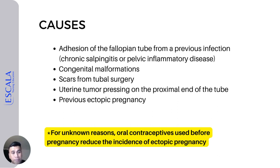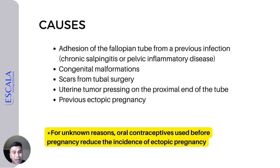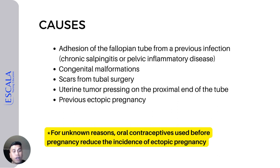Another cause is a uterine tumor which presses the proximal end of the tube. And of course, if a previous ectopic pregnancy has occurred, that can also lead to recurrence. Remember, because this has been misconceived before: oral contraceptives do not cause ectopic pregnancy. In fact, for unknown reasons, oral contraceptives used before pregnancy actually reduce the incidence of possible ectopic pregnancy. This is a very important highlight for this discussion.